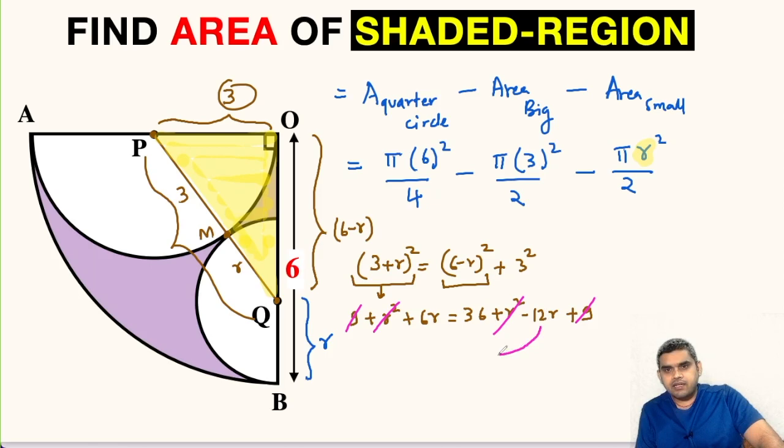r² and r² will get cancelled. Likewise 9 and 9 can be cancelled. This 12r can be shifted on LHS, so 12r plus 6r will be 18r equals 36. So r will be 36 divided by 18, that is 2.